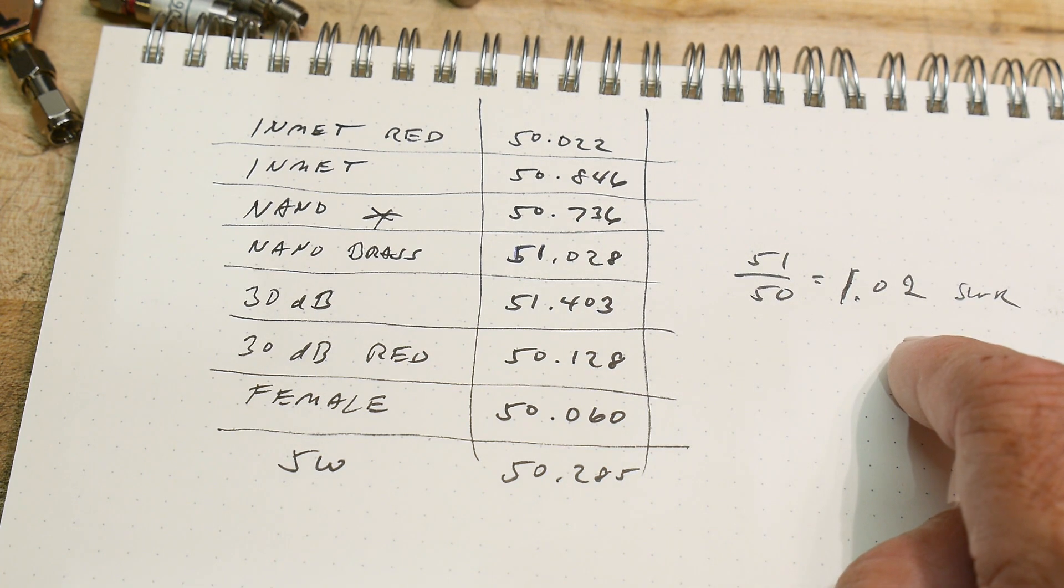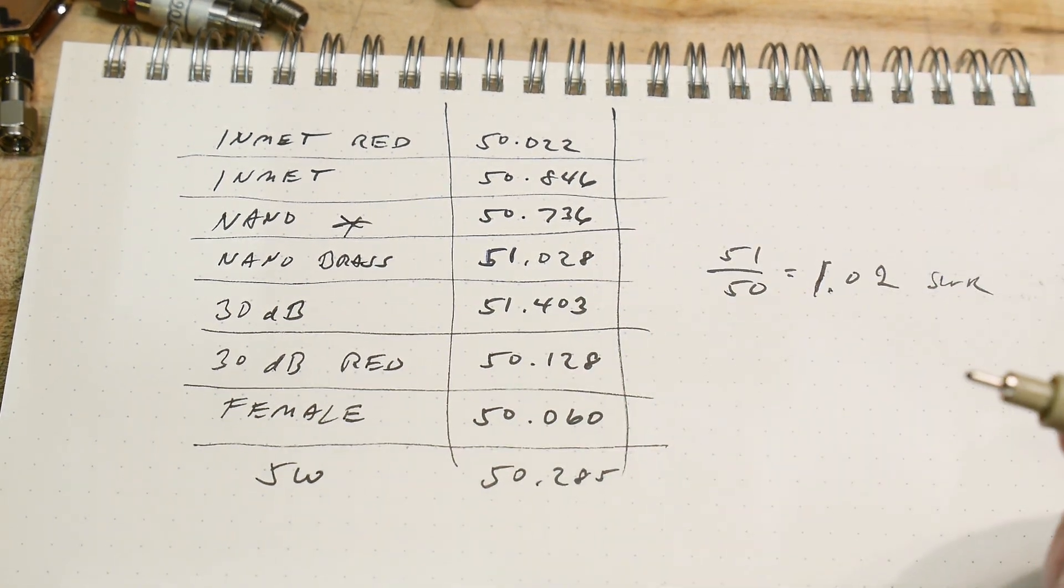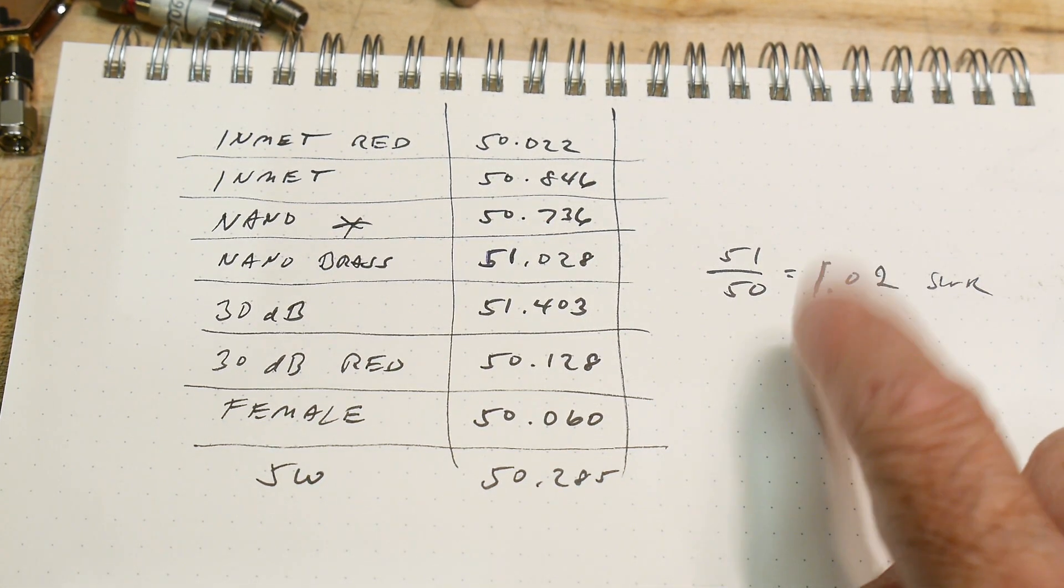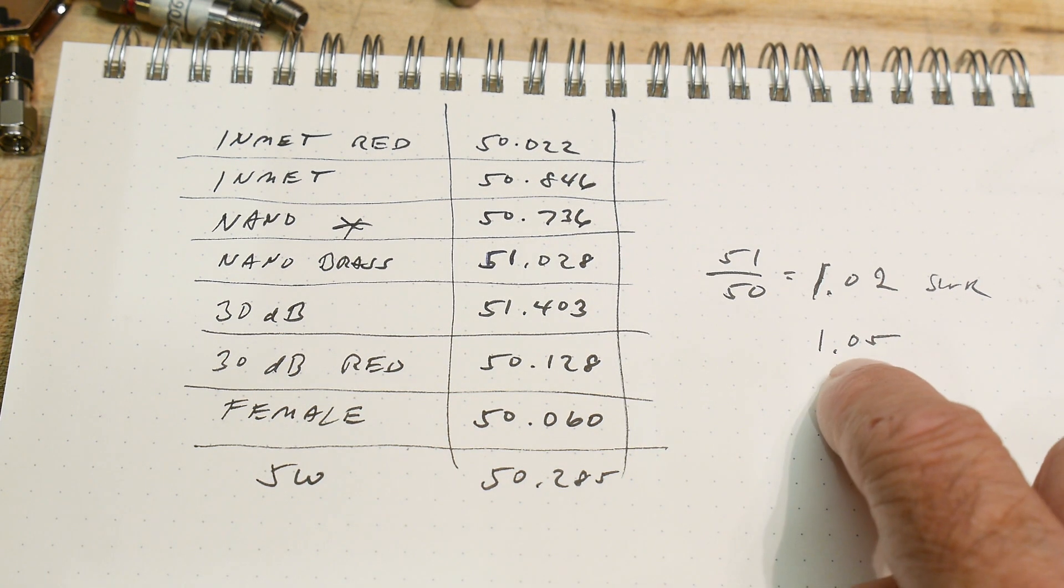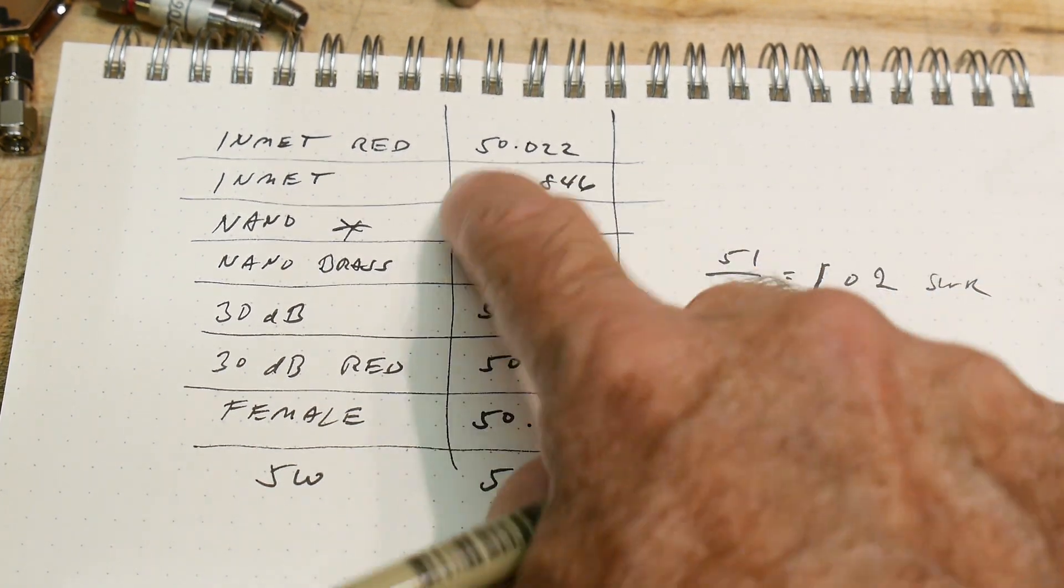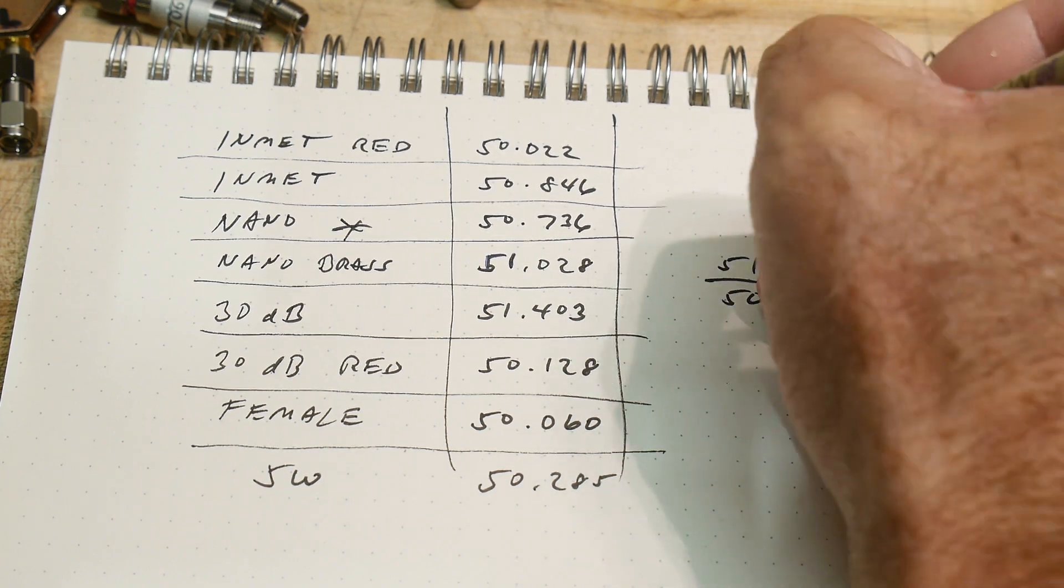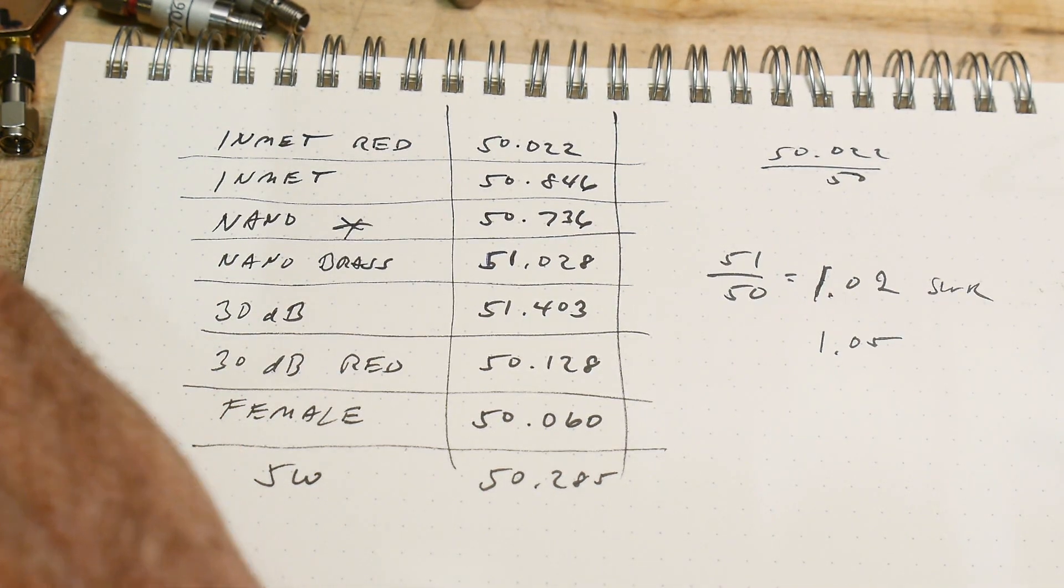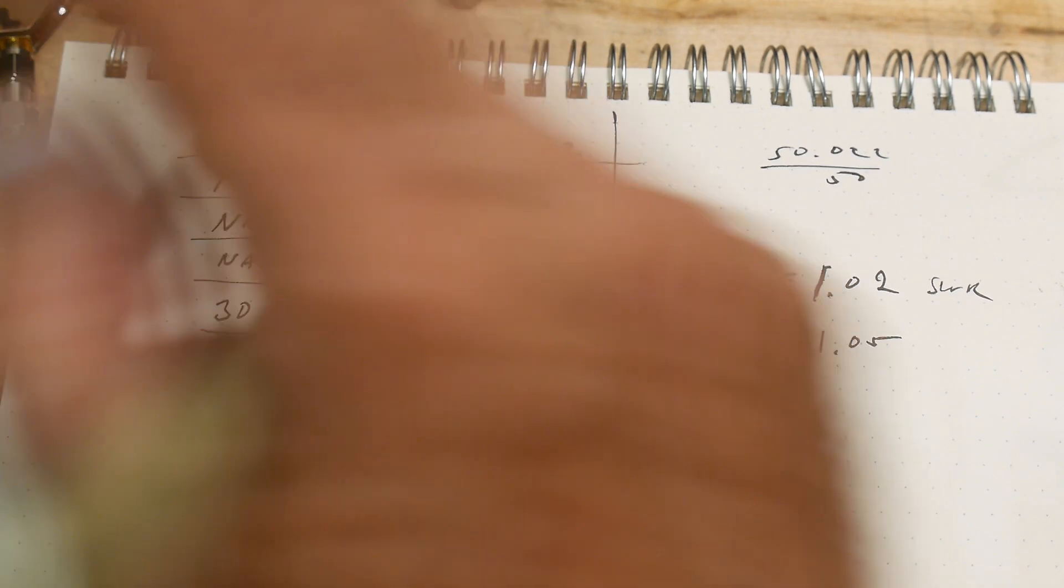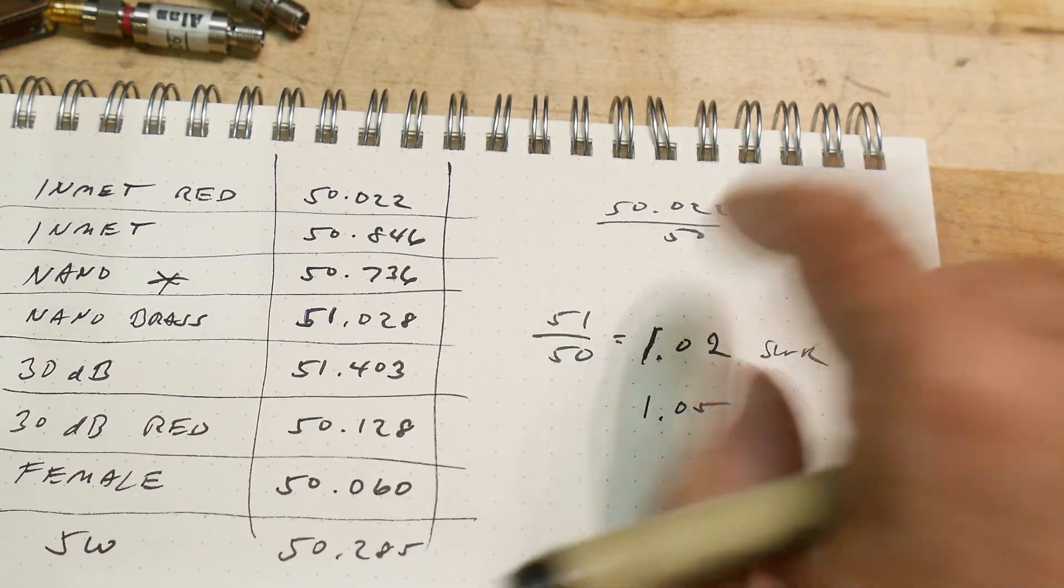So I was looking online to buy some better cal standards and the best ones that I saw for sale said they were going to be guaranteed to 1.05 SWR. And you pay a lot of money for something this good, but we're looking for something much, much, much better. These 50.02, so 50.022 divided by 50, right? That's going to be a really small number, right? 50.022 divided by 50 is 1.0004. See, that's an SWR of 1.0004, right? This is a perfect load.